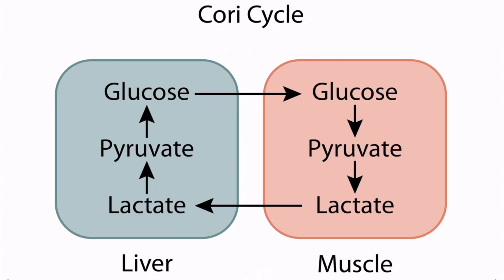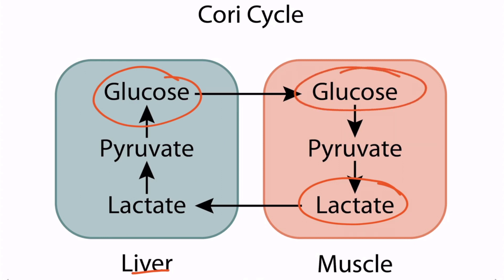Let's look at the figure of the Cori cycle to understand this better. Lactate is produced by the muscle from anaerobic metabolism, and that lactate can then travel to the liver, where it can be converted back into glucose through gluconeogenesis. The glucose can then go back to the muscle to provide additional energy. In von Gierke disease, the final step in gluconeogenesis — which produces glucose — is defective. This means the lactate cannot be reused, so it accumulates in the blood, resulting in a lactic acidosis.